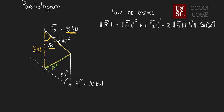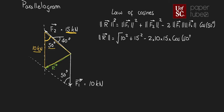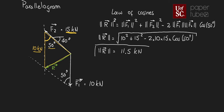Carrying out the calculation, the magnitude of R equals the square root of 10 squared plus 15 squared minus 2 times 10 times 15 times cosine of 50 degrees. This gives a magnitude of R equal to 11.5 kilonewtons, reported to three significant figures. This is the magnitude part of the solution.